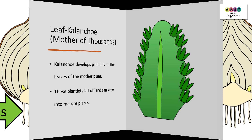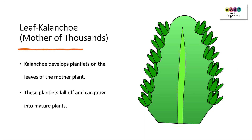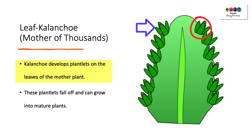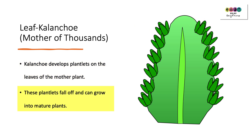The final example of natural vegetative propagation involves an example from the leaf, and we're going to use Kalanchoe, otherwise known as the mother of thousands. This plant develops plantlets on the leaves of the mother plant, all around the big leaves. These plantlets will fall off and can grow, if they land in suitable soil conditions, into mature plants.